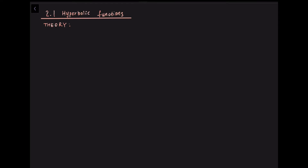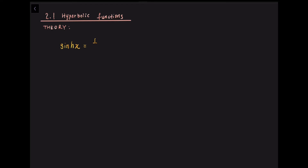We begin with the two functions, hyperbolic sine of x and hyperbolic cosine of x, written sinh(x) and cosh(x). They are defined by the relationship where sinh(x) equals 1/2 times (e^x minus e^(−x)), whereas cosh(x) equals 1/2 times (e^x plus e^(−x)).